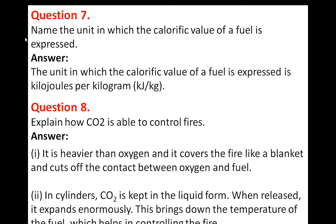Question 8: Explain how CO2 is able to control fire. CO2, being heavier than oxygen, covers the fire like a blanket and cuts off contact between oxygen and fuel. In a cylinder, CO2 is kept in liquid form under pressure, similar to LPG. When released, it expands enormously, bringing down the temperature of the fuel, which helps in controlling the fire.